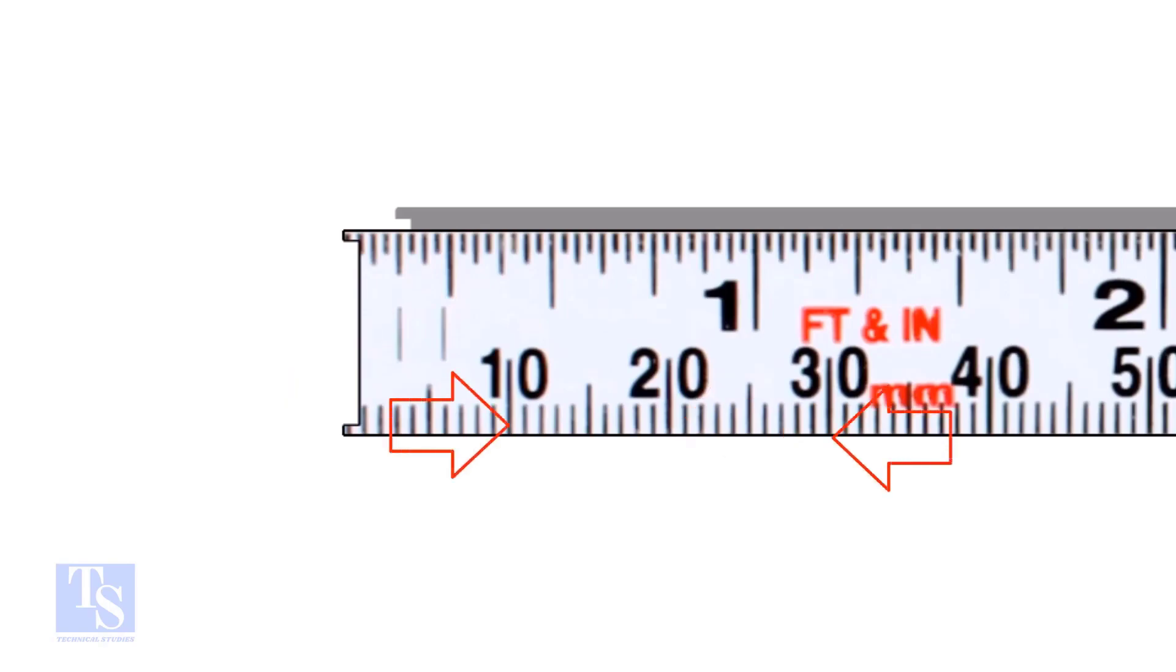What is the distance from here to here? That is 30 minus 10 is equal to 20 millimeters.